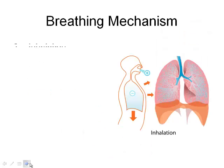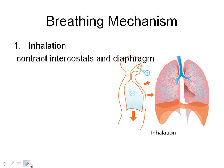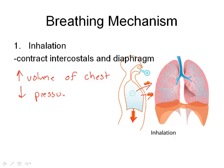So the breathing mechanism. First of all, for inhaling — when we want to get air into our lungs so we can provide ourselves with nutrients — what happens is the intercostals come out, and the diaphragm contracts and pulls down. What this does is it increases the volume of the chest cavity. And when there's more volume, it causes the pressure to decrease. Since there's more room and less pressure, air from outside will enter. That's strictly because of that difference in pressure.